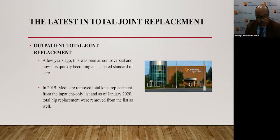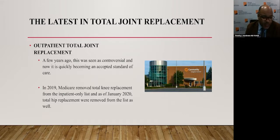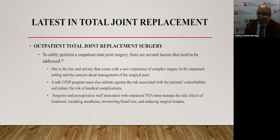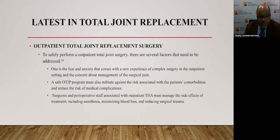Another latest trend in total joint replacement — which is not particularly cutting-edge but is still new to the public at large — is outpatient total joint replacement. A few years ago, this was seen as controversial, and now it is quickly becoming an accepted standard of care. In 2019, Medicare removed total knee replacement from the inpatient-only list, and in January 2020, total hip replacement was also removed from the list. To safely perform an outpatient total joint replacement, several factors need to be addressed: the fear and anxiety of complex surgery in the outpatient setting, management of surgical pain, mitigation of risks associated with patient comorbidities, and management of side effects including anesthesia, blood loss, and surgical trauma.